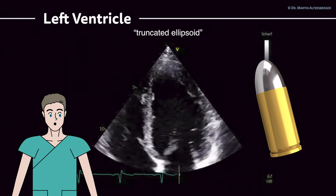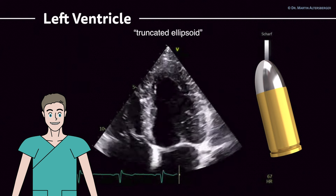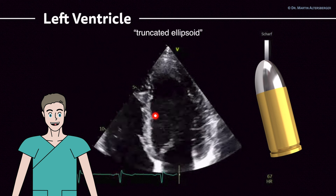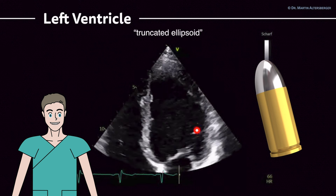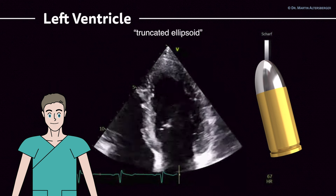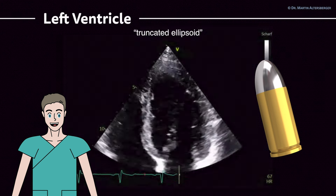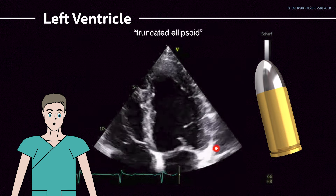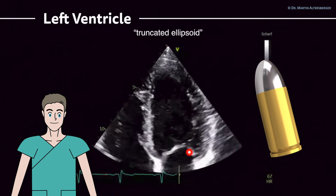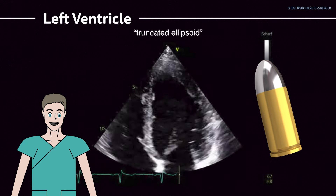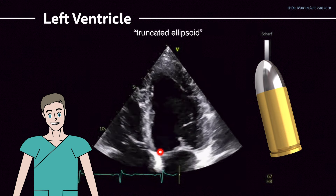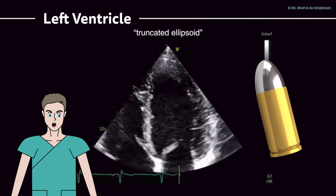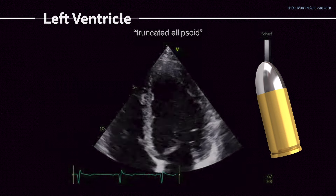The contractility of this left ventricle is fairly good. The ejection fraction is in the range of 55 to 60 percent, and you can see that all walls are contracting quite nicely. This is a focused view of the left ventricle where the atria are completely cut off, giving you the advantage of seeing the ventricle in an optimal position.